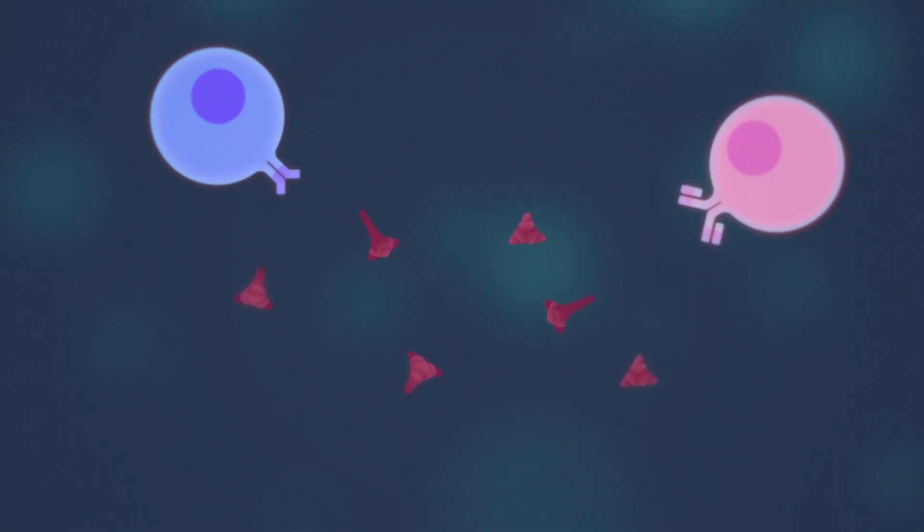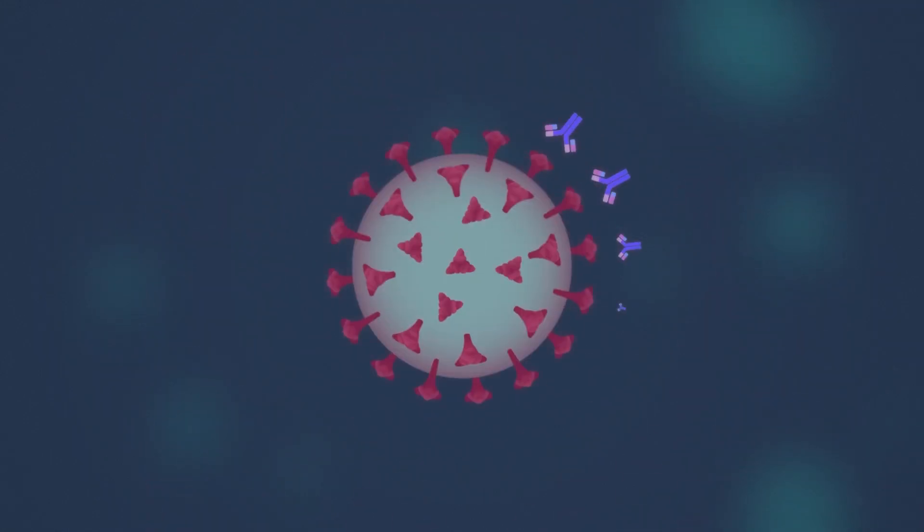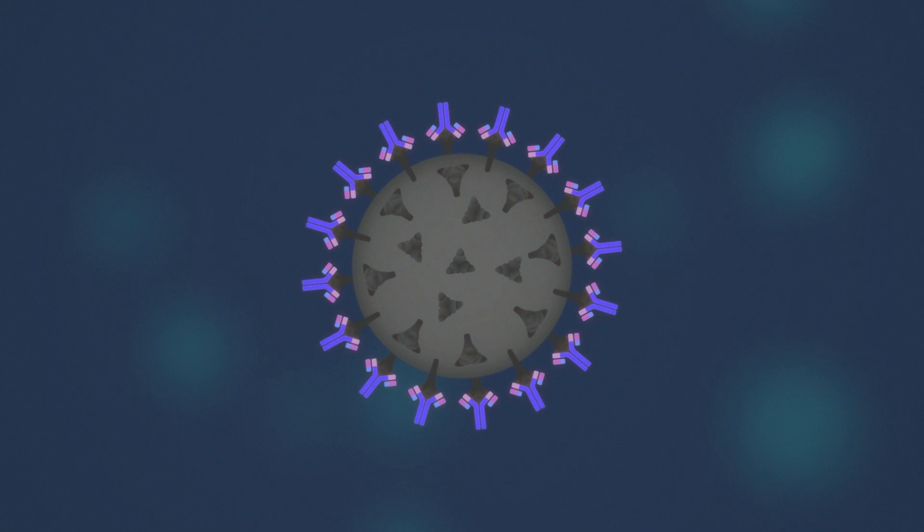The immune system begins to build the manufacturing process for new antibodies. So if and when a real COVID-19 virus is found, our immune system can immediately produce loads of antibodies and kill it before it reproduces.